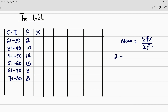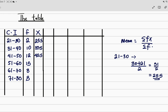Let me pick the first class interval entry, which is 21 to 30. To get the mid value, you find the average: 30 plus 21 equals 51, divided by 2, which gives 25.5. That is how we calculate the mid value. So in the column we have 25.5, then 35.5, then 45.5, and so on down the table.